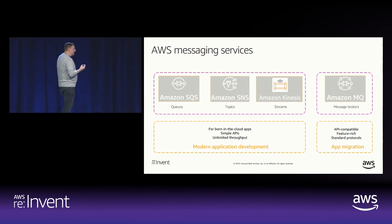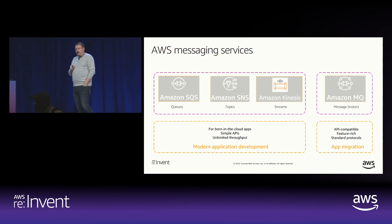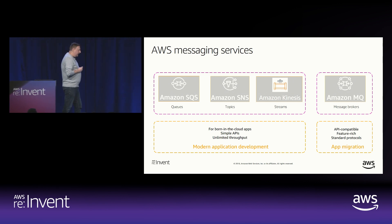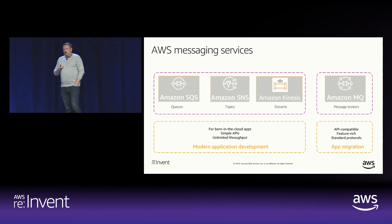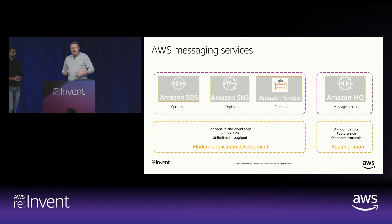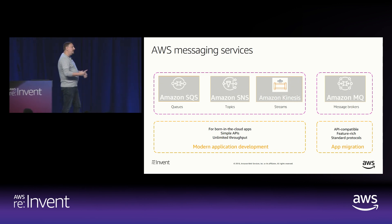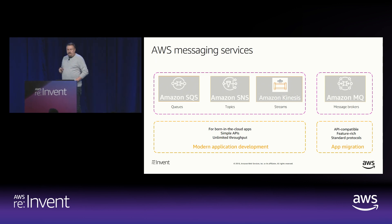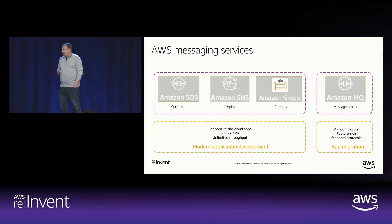In AWS, we have a bunch of services for messaging. We've got SQS for queues, SNS for topics, Kinesis for data streams, and last year at re:Invent we launched Amazon MQ, a hosted ActiveMQ broker. Amazon MQ is designed to enable you to move existing software that talks to an on-premise broker into the cloud. In this session, we're going to focus on SQS, SNS, and Kinesis. I'll hand it over to Sid to talk about customer use cases for messaging.